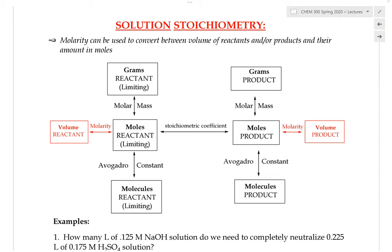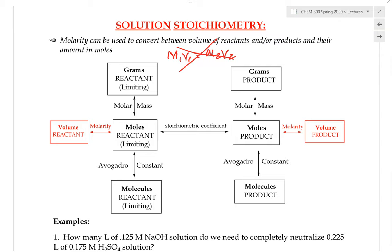With that being said, please never use M1V1 = M2V2 in solution stoichiometry. When you involve adding two solutions together to do a chemical reaction, this is solution stoichiometry — therefore do not use M1V1 = M2V2. This is a very common mistake on this topic.